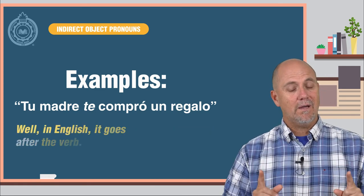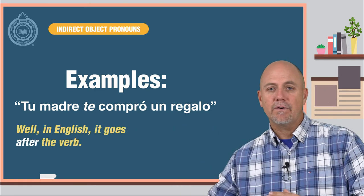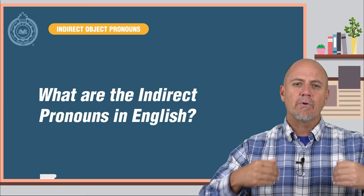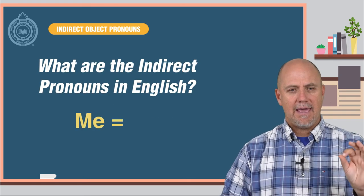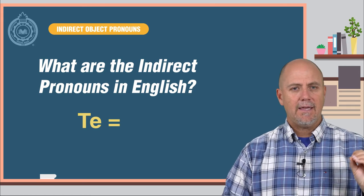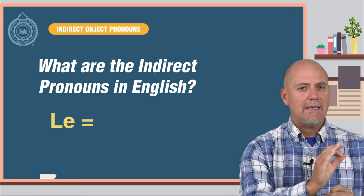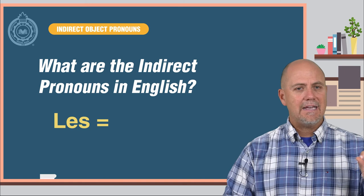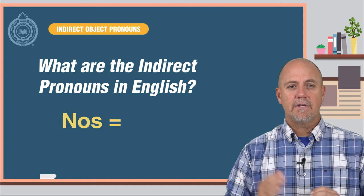Well, in English, the pronoun goes after the verb. So, what are the indirect pronouns in English? Me is me. Te is you. Le is him or her. Les is them. Nos is us.